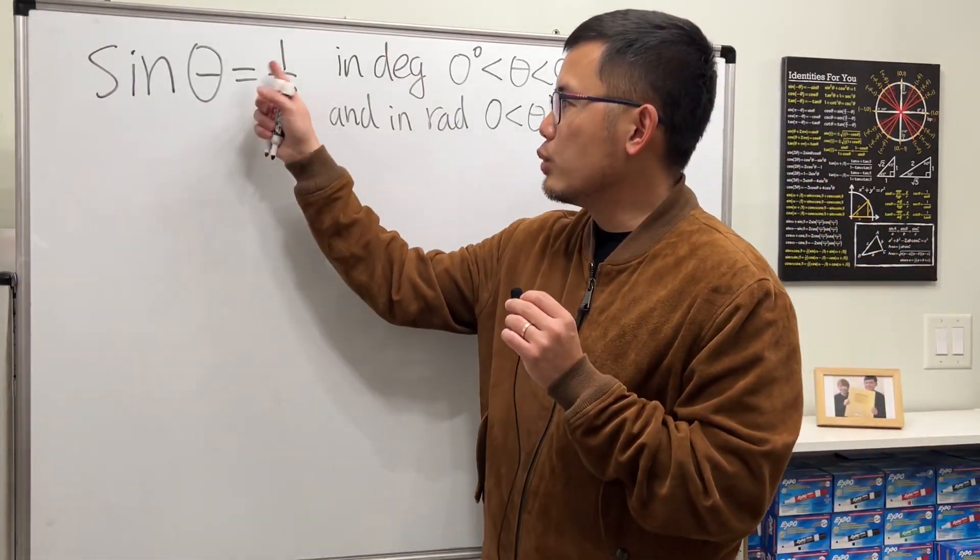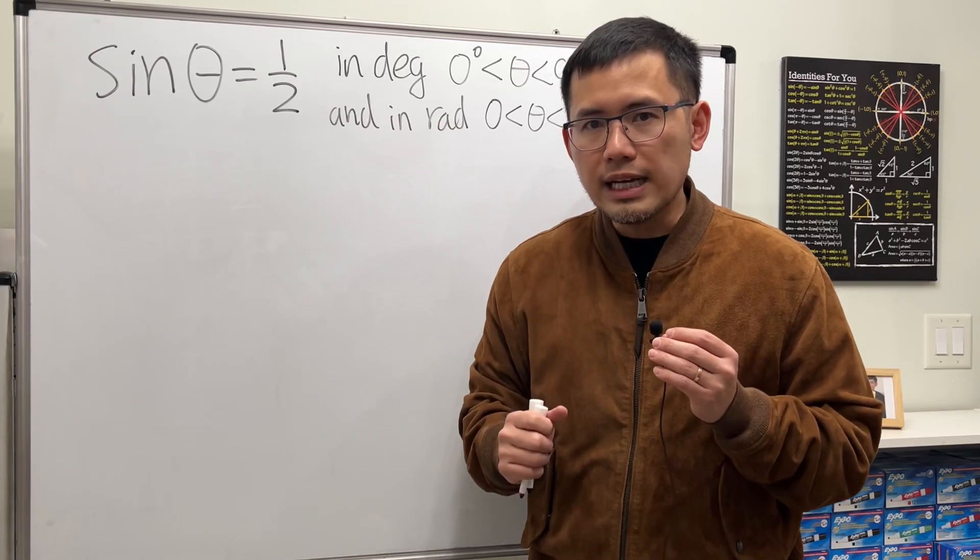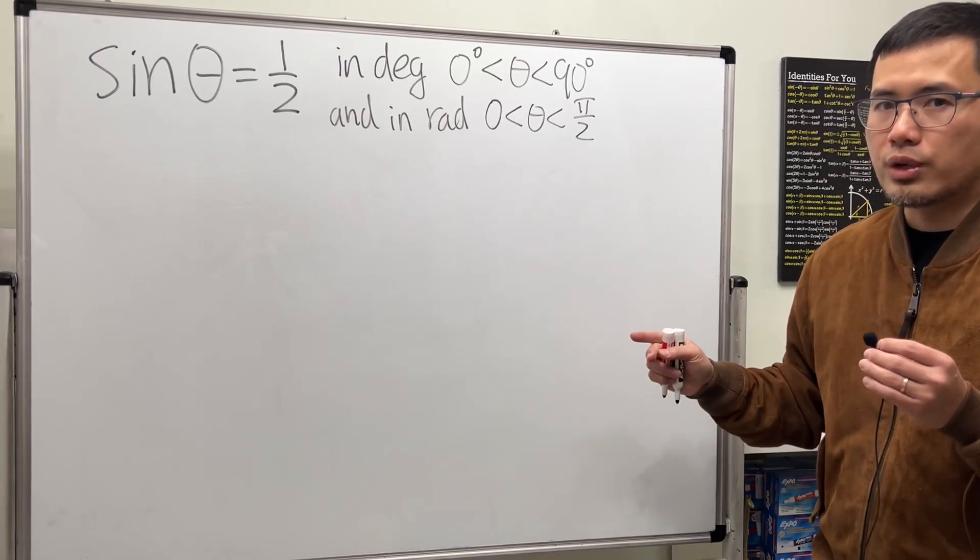We have sin theta equals 1 half. And whenever we are trying to solve this kind of equation, if the question is asking you to not use the calculator, then we must remember the following two special right triangles.